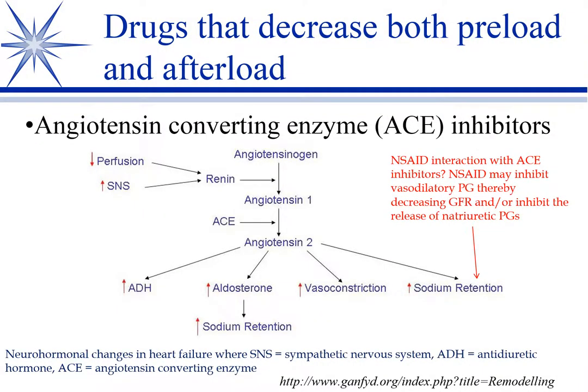Nearly every congestive heart failure you treat will be on an ACE inhibitor, an angiotensin-converting enzyme inhibitor. Here's the mechanism: we get decreased perfusion from the failing heart, which causes increased sympathetic nervous system activation. That stimulates release of renin. Renin converts angiotensinogen into angiotensin-1, and then the angiotensin-converting enzyme converts angiotensin-1 to the active angiotensin-2.